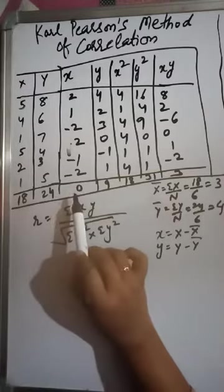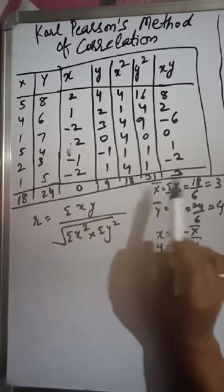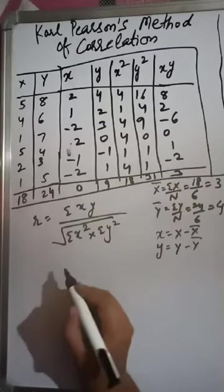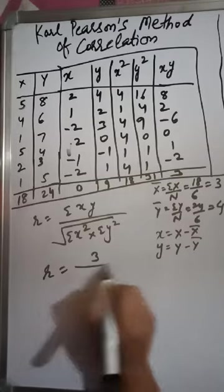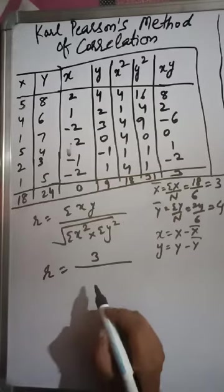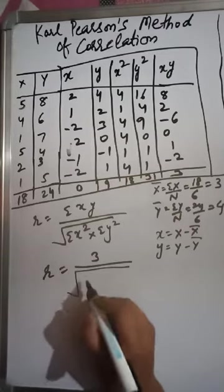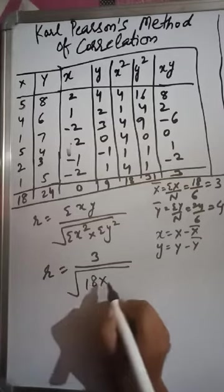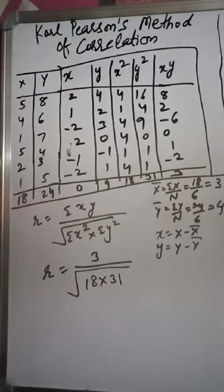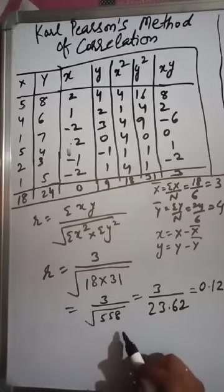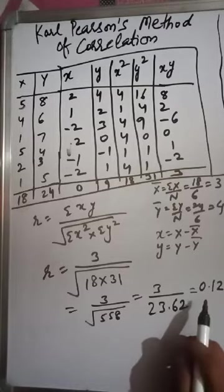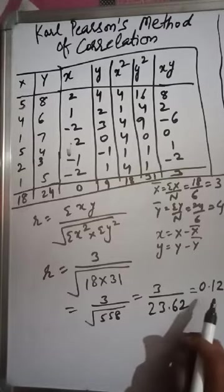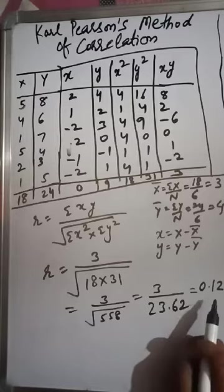We compute Σx, Σy, Σx², Σy², and Σxy. Putting these into the formula: Σxy = 3, Σx² = 18, Σy² = 31. After solving, we get r = 0.12. Since 0.12 is very close to 0, the correlation between these two variables is very low in this case.